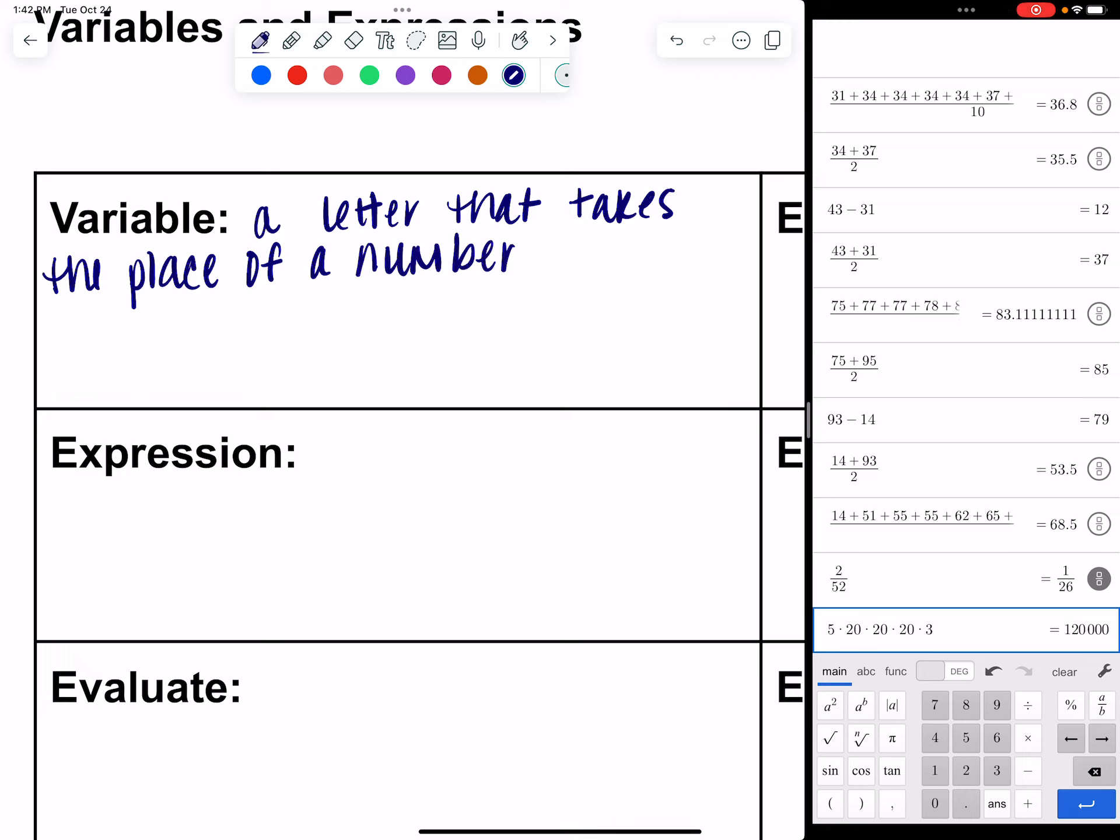And we use a variable in place of a number so that, almost the root word of variable, vary, that means to change. We use a letter for a variable so that we can put whatever number we want to in place of that variable. Its value can change.